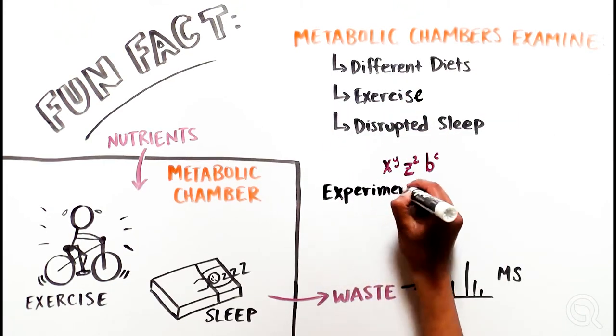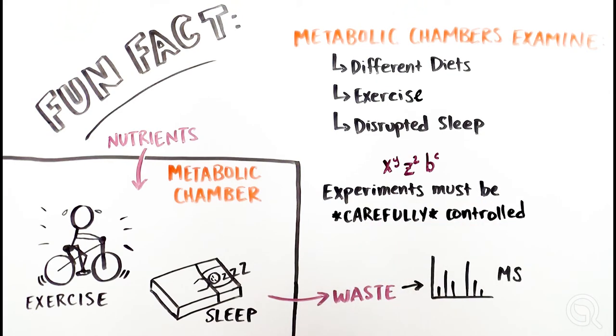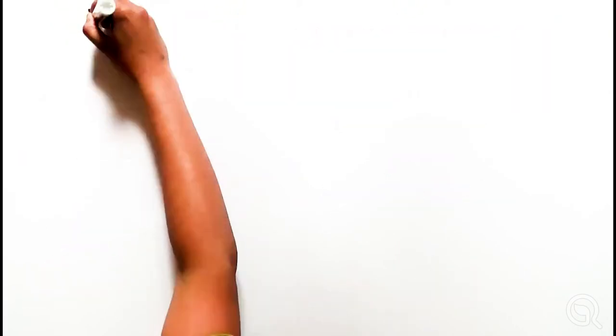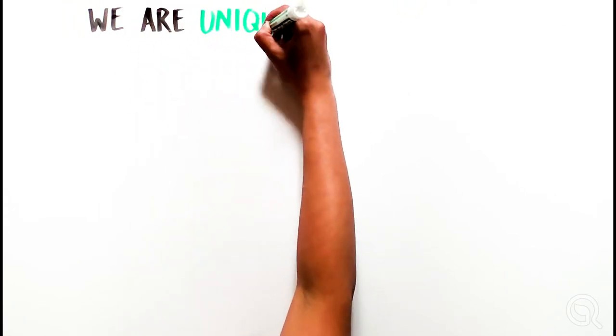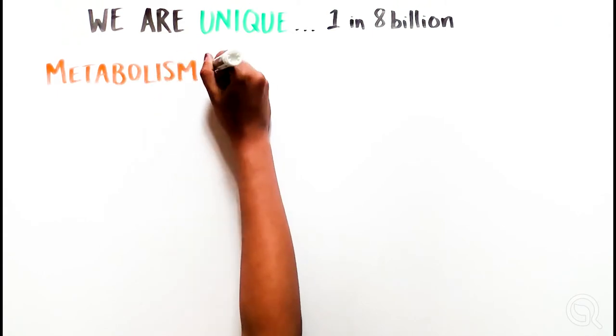It's important to carefully control metabolic experiments, since what volunteers had for breakfast might influence the results. We are each unique, one in 8 billion, and metabolism is a perfect example of that.